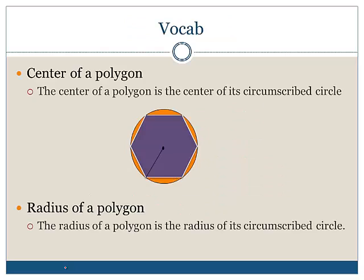The center of a polygon is the center of its circumscribed circle. We can see our polygon here and each of the sides touch the edge of our circle. The radius of a polygon is the radius of its circumscribed circle. Here's the center of our polygon and the black line shown is our radius. We can connect our center point to each of the vertices of our polygon, and all these radii have the same length.